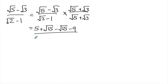So root 2 times root 5 is root 10. Root 2 times root 3 is positive root 6. Negative 1 times root 5 is negative root 5, and negative 1 times root 3 is negative root 3.